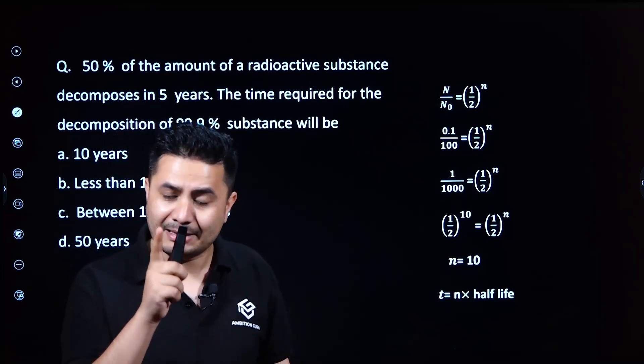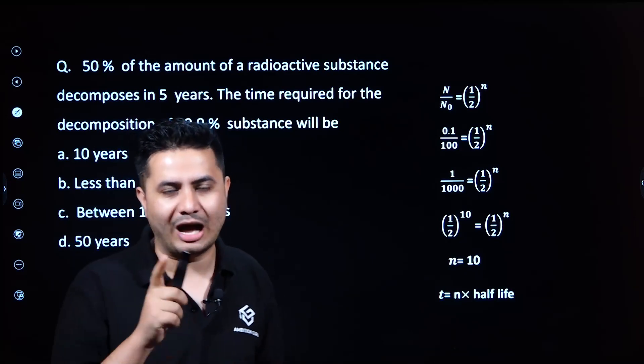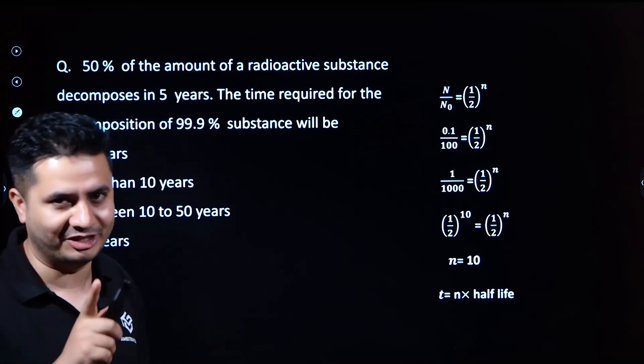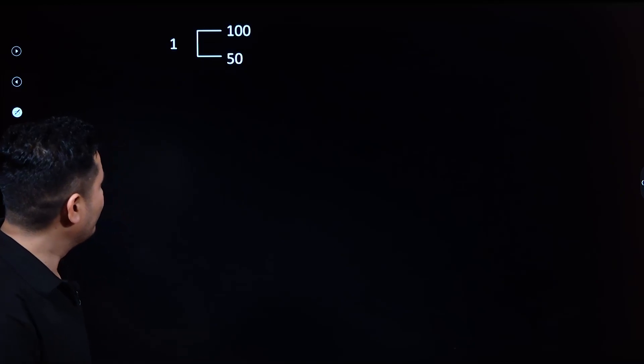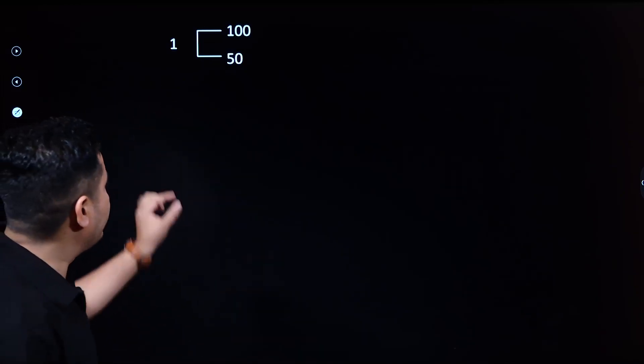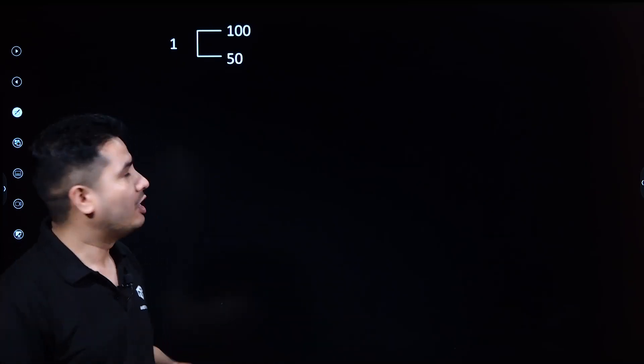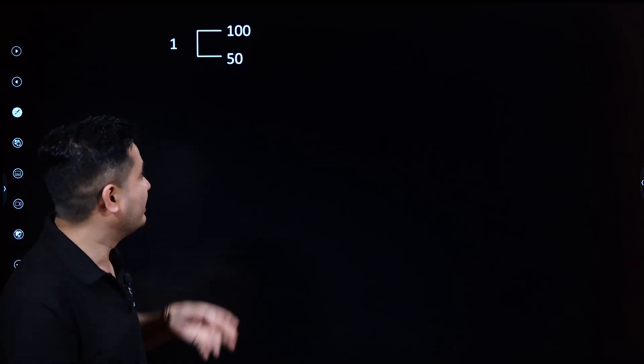Let me explain diagrammatically about the half-life period concept. Starting with 100 as the initial amount or concentration of the substance at time t=0, after one half-life period, 50% or 50 units of the substance remains undecayed.